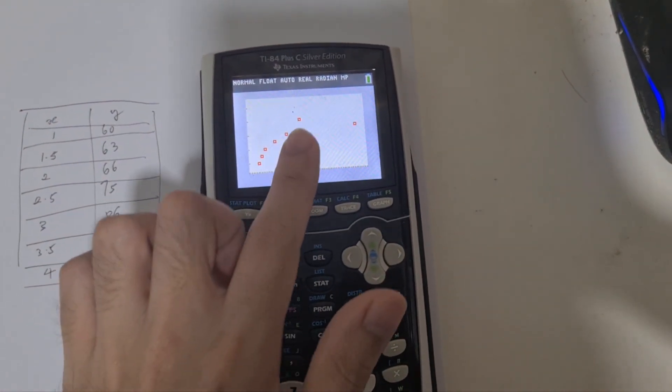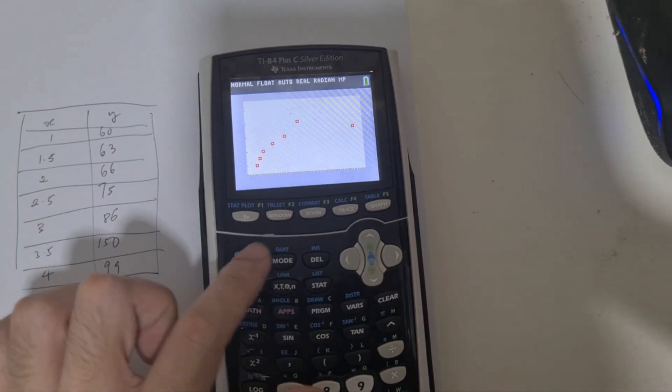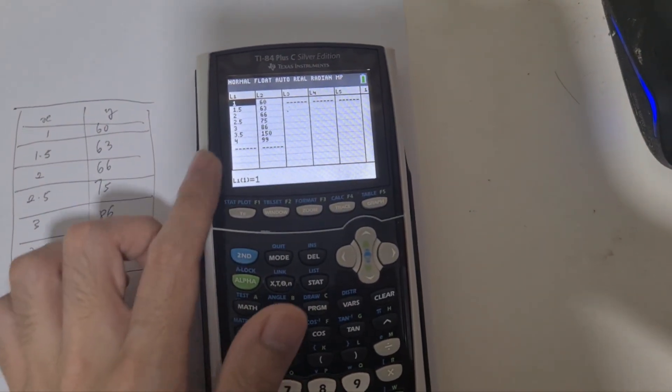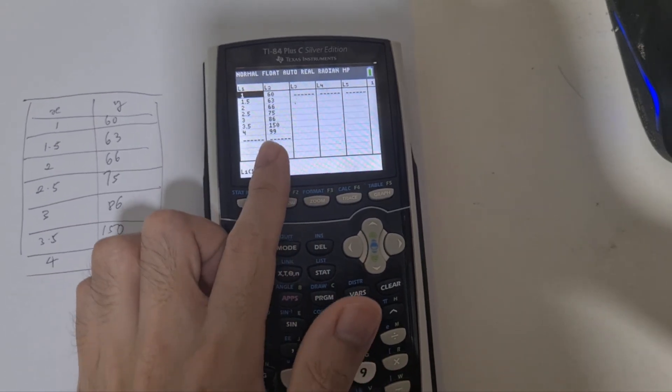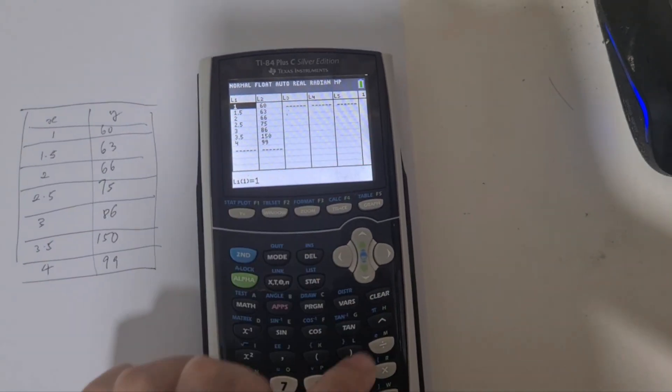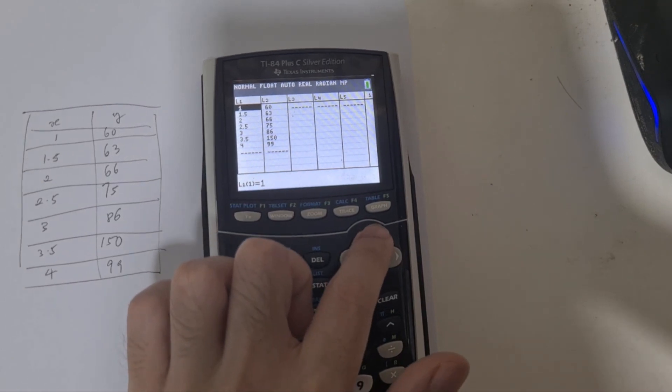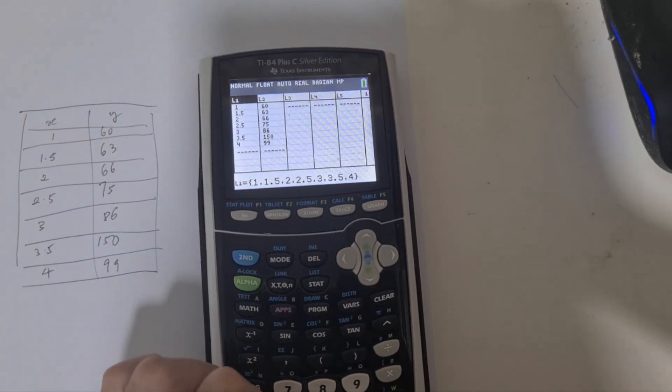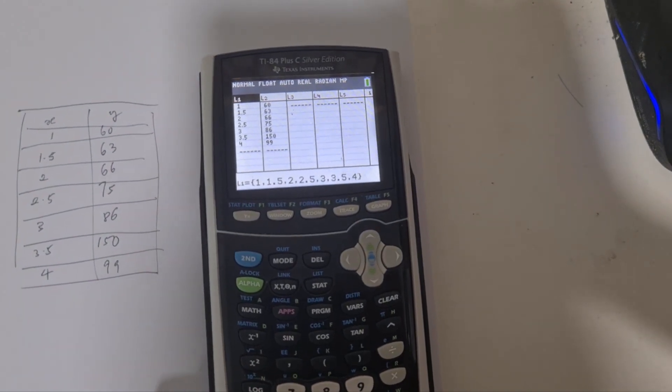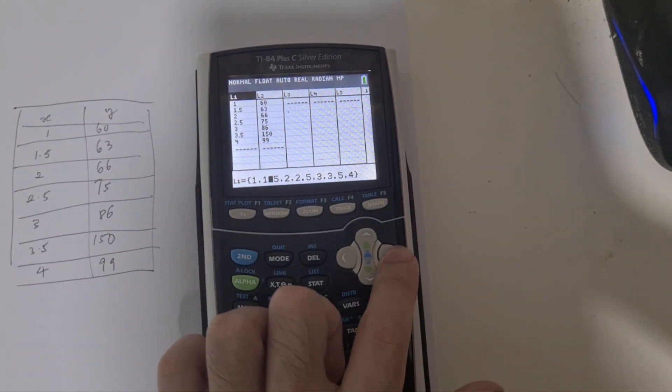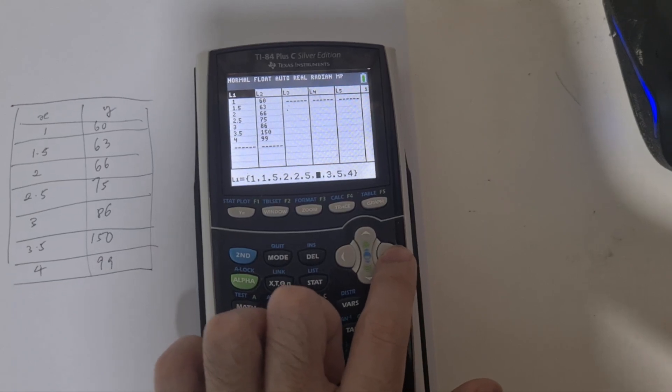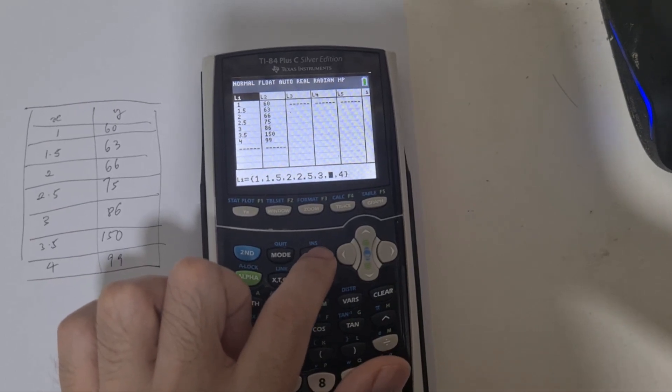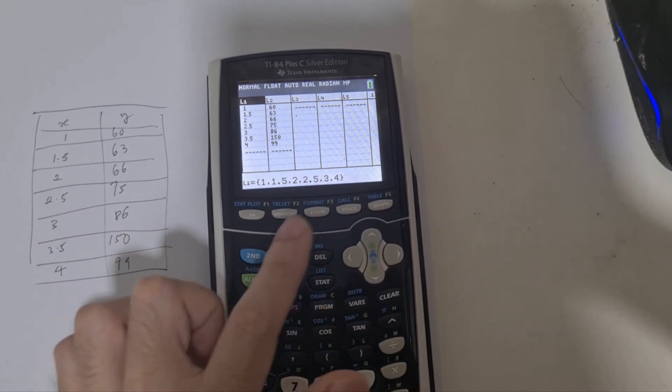So how do you go about removing this outlier? If we go back to the table, the outlier is actually 3.5 and 150, which is the second last point. All you do is click up so the L1 cell is highlighted, press ENTER, go to the point you want to remove, press delete together with the comma, and then press ENTER.